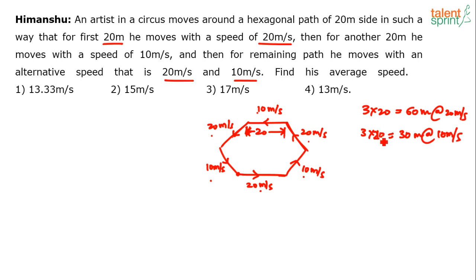Sorry, 3 into 20 again, 60 meters of the journey. Total distance covered is 120 meters, right? 20 times 6 is 120. So out of that 120, 60 meters he has covered at 20 meters per second and another 60 meters he has covered at 10 meters per second. That is it, done.